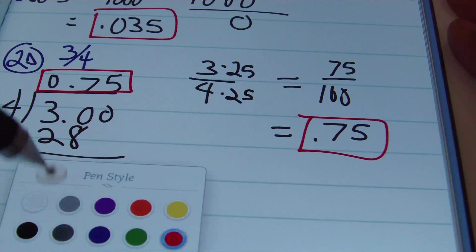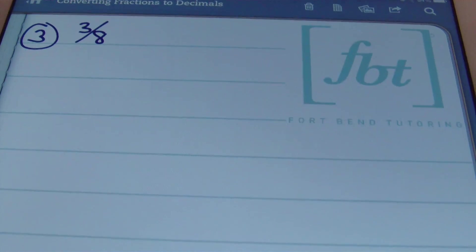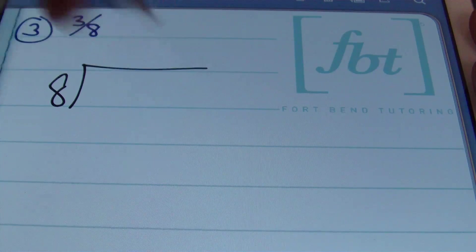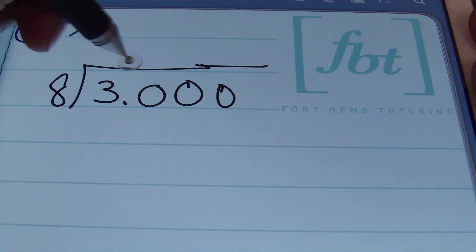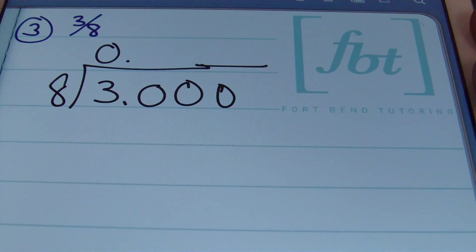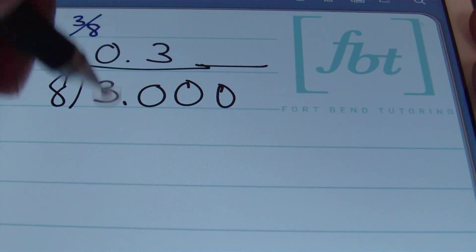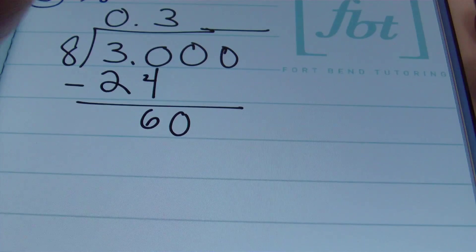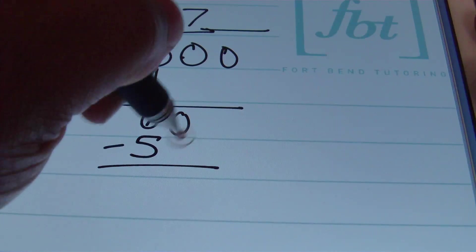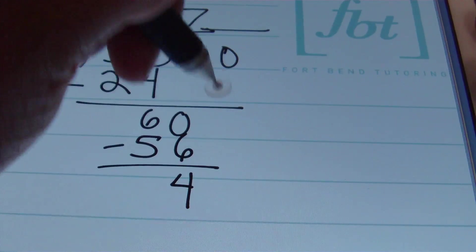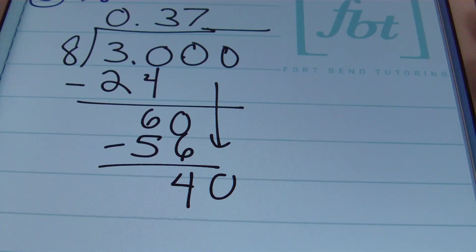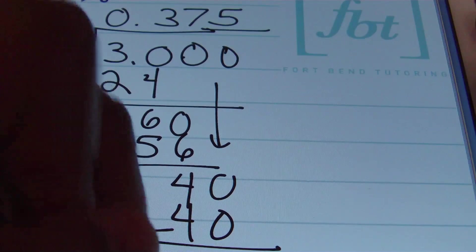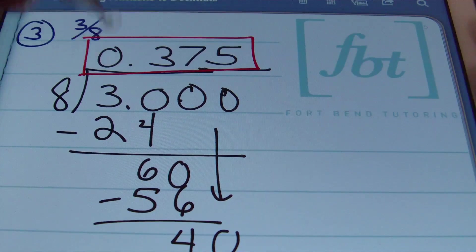In problem 3 we have three-eighths. Using long division with 8 as divisor going into 3: eight goes into 3 zero times, into 30 three times (3 × 8 = 24). Bringing down, 8 goes into 60 seven times (7 × 8 = 56). Bringing down again, 8 goes into 40 exactly five times. The result is 0.375 — three hundred seventy-five thousandths.